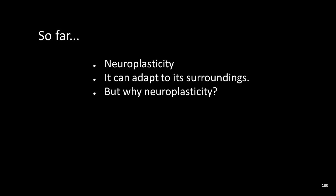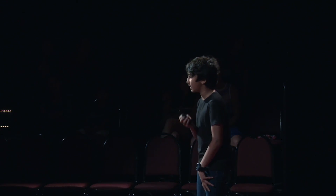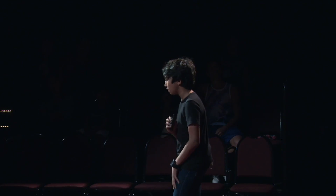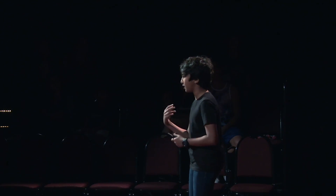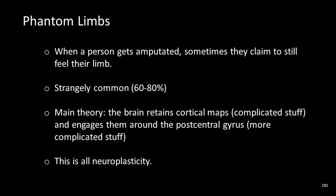So far, neuroplasticity is your brain's ability to change and adapt to its surroundings. But why neuroplasticity, and how is it used in the real world? Some of you may have heard of phantom limbs. Phantom limbs occur when a person is amputated and they actually feel pain in the arm or leg that was never there. This is strangely common, occurring in 60 to 80% of individuals who were amputated. And these are all examples of neuroplasticity.